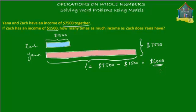But what is the question asking us to find out? The word problem is asking us to find out how many times as much income as Zach does Yana have. What this means is that if Zach is making one blue box, then how many blue boxes is Yana making? It wants us to find out Yana's income in relation to Zach's income.